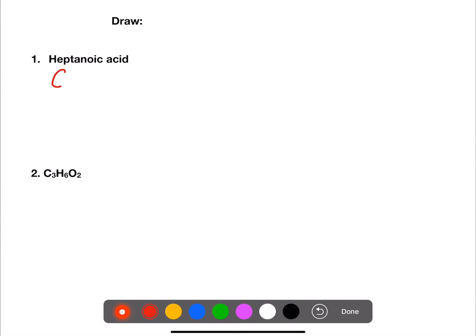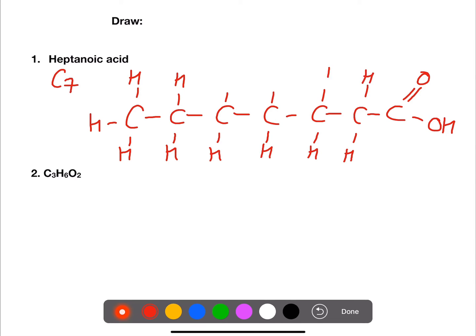So heptanoic acid is C7, so we start with our backbone of seven carbons. And on the end carbon, it can be either end, we draw the functional group. Go along and fill in all of the bonds for the carbons, making sure each of them has four. And add in all of the hydrogens.